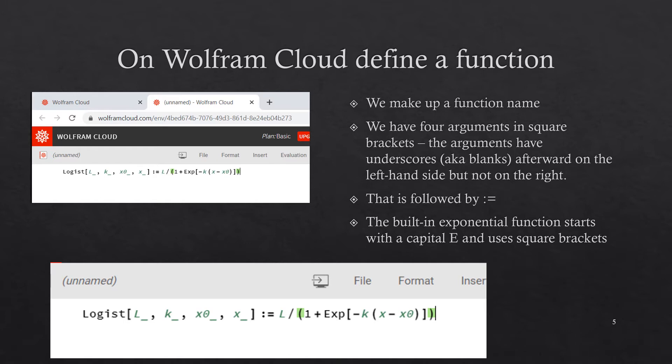Then we have square brackets. Then we have four arguments: l underscore, k underscore, x0 underscore, x underscore. These are the arguments of our function. They have underscores, also known as blanks, on the left-hand side, but those blanks will not appear on the right-hand side.